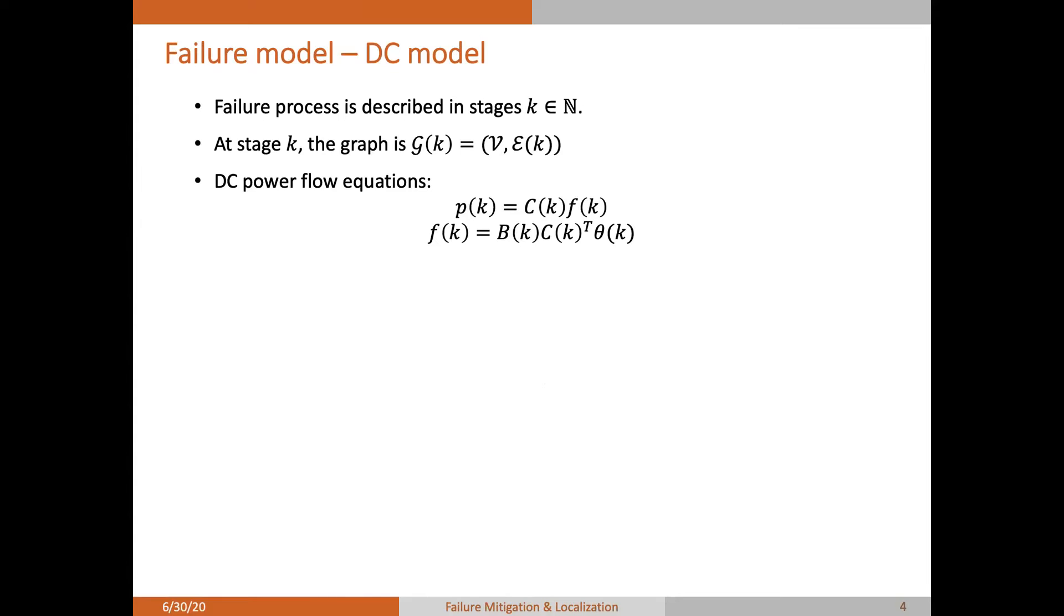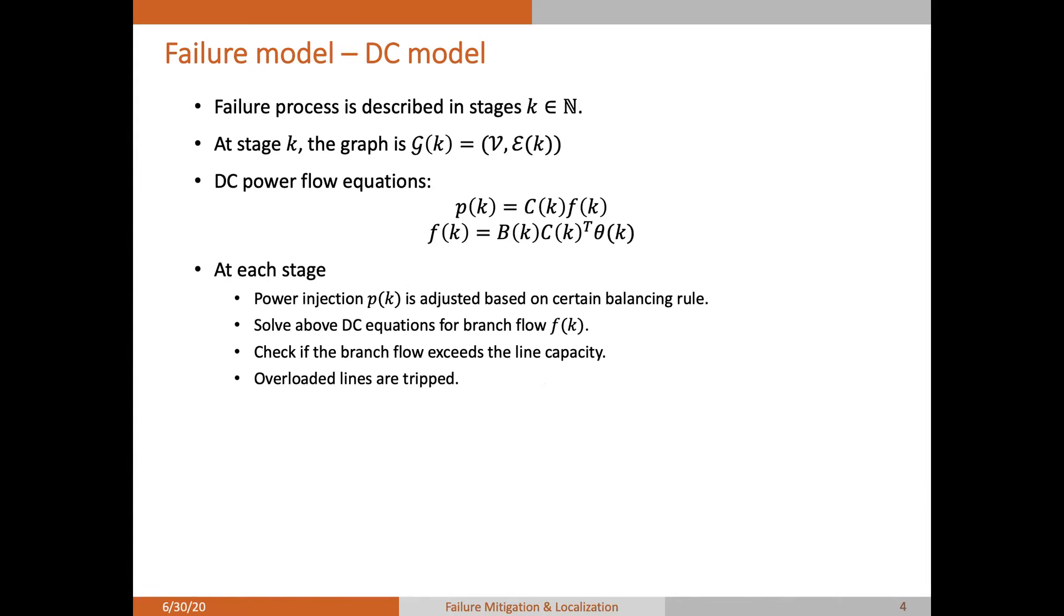We use a valid used DC model in the cascading failure literature, where we describe failures in stages. At each stage, the power injection is adjusted based on a certain balancing rule, and then the power of branch flow is solved by using these DC power flow equations. Then we check if the branch flow exceeds the light capacity or not, and we trip the overloaded lines at the next stage. For the balancing rule, there is actually a variety of these balancing rules. But the most common one is the following, that the power injection remains the same if the system is still connected. Otherwise, the nodes will proportionally adjust their injections to compensate the imbalance in islanding.